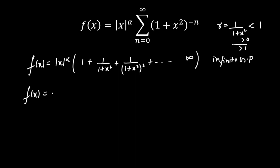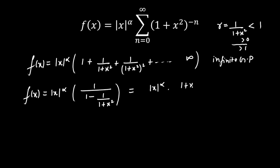So f(x) can be written as |x|^α multiplied by 1 upon (1 − r), where the common ratio r is 1/(1 + x²). If I simplify, I get |x|^α multiplied by (1 + x²) divided by x². I can take x² inside the mod since x² is positive, giving f(x) equal to |x|^(α−2) multiplied by (1 + x²). This is a beautiful simplified form.